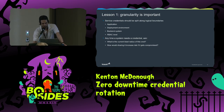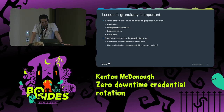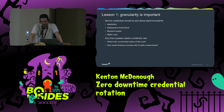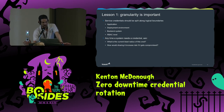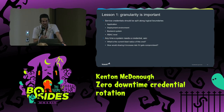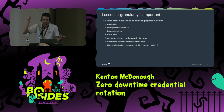Lesson one: granularity is important. Service credentials should always be split along logical boundaries — by application, deployment environment (separate for dev, test, pre-prod, prod), backend system, and RBAC level. Anytime you need to make a new credential, ask: what is the current blast radius of the credential I already have, and how would sharing it increase risk if it gets compromised? You'll find this out once you start rotating credentials and stuff breaks in totally random places — like getting a call asking why an app broke in pre-prod when you rotated a prod credential for a totally different system.